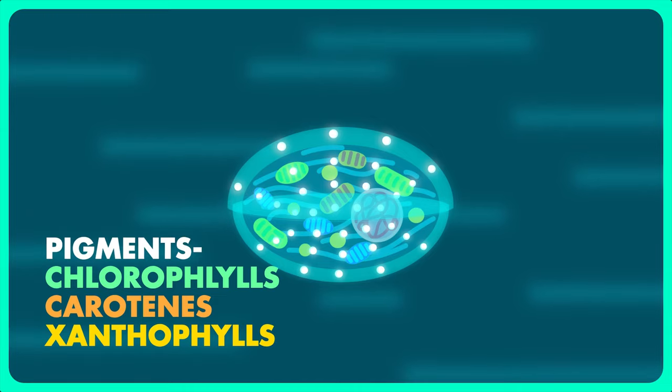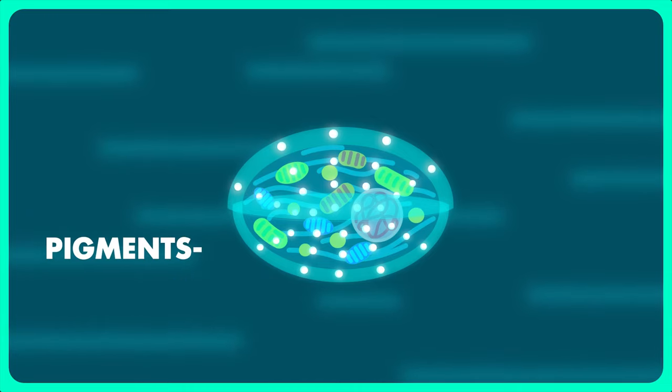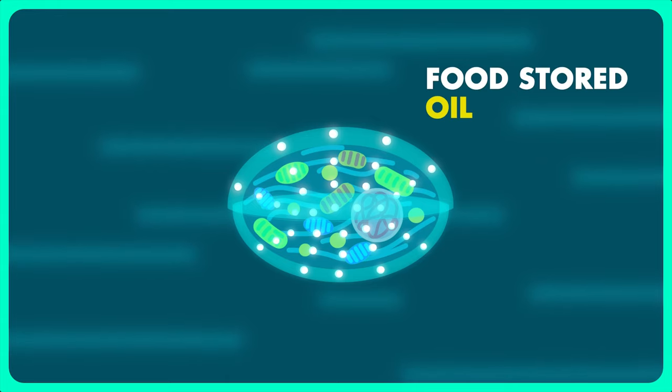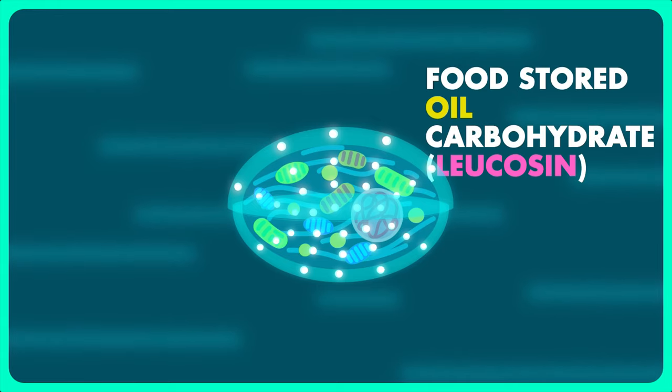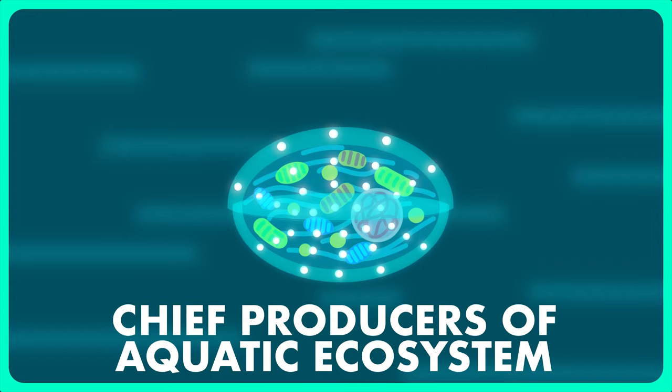The food produced is stored in the form of oil droplets and a special type of polysaccharide called leucosin. Due to their large number and ability to perform photosynthesis, these organisms are called chief producers of aquatic ecosystem.